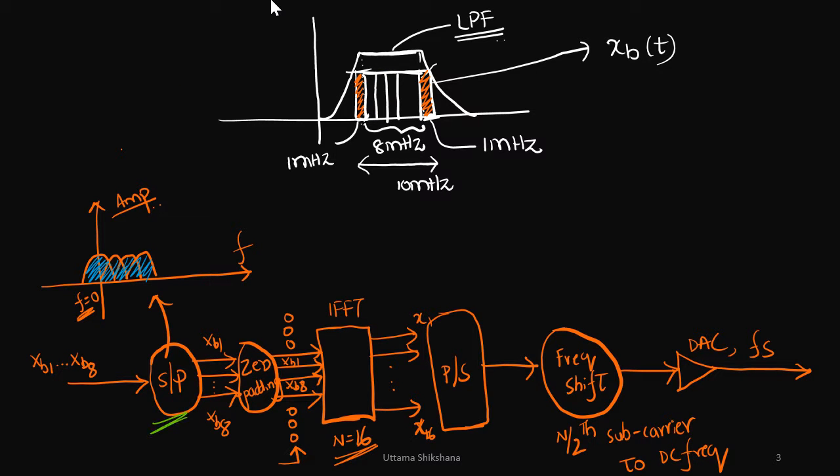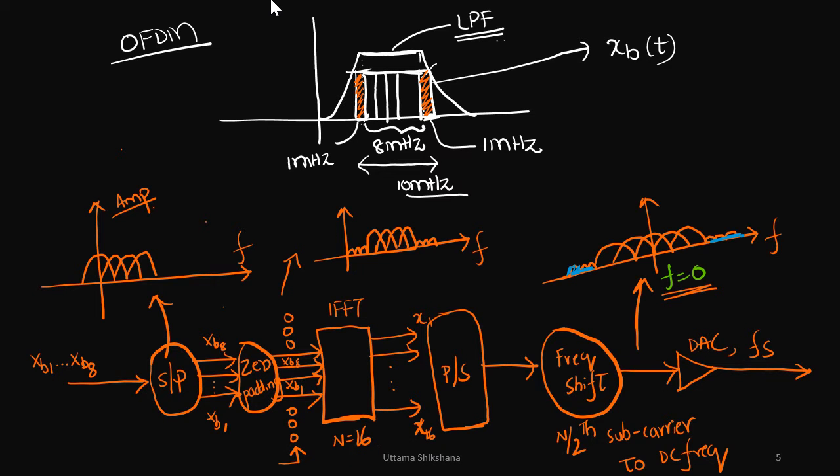At the serial to parallel converter block, this is how the spectrum looks like. So this is the first subcarrier, second, third, fourth, this is how it was mapped, starting with f equals zero. Later on after zero padding, the frequency spectrum looked like this.